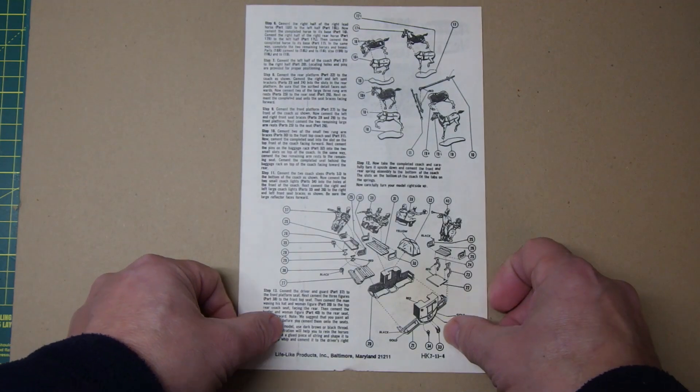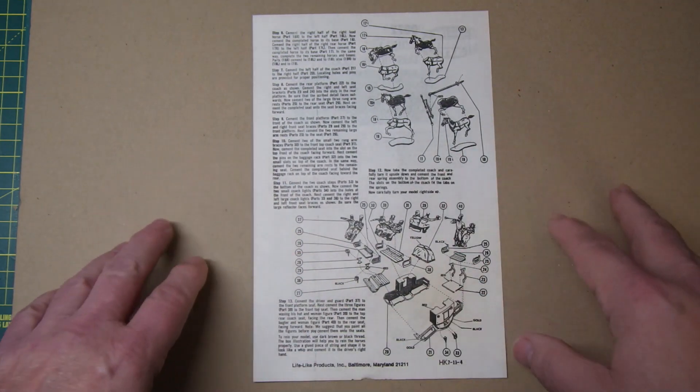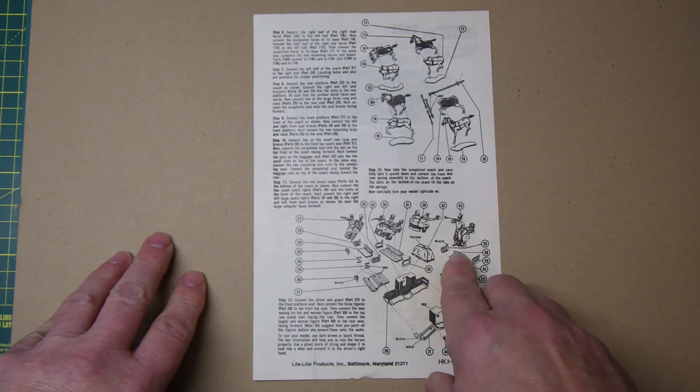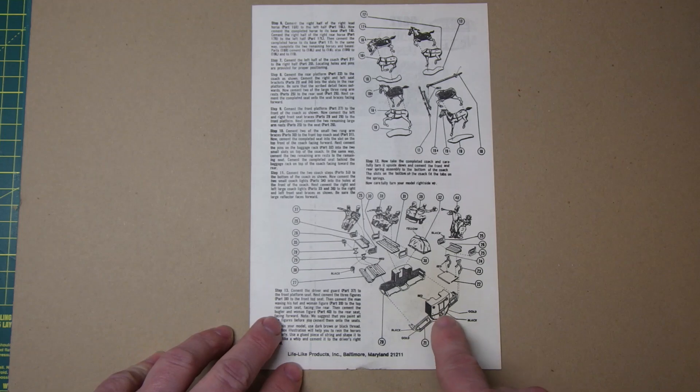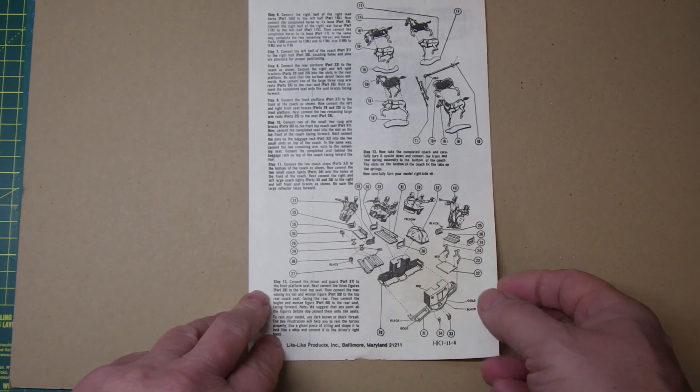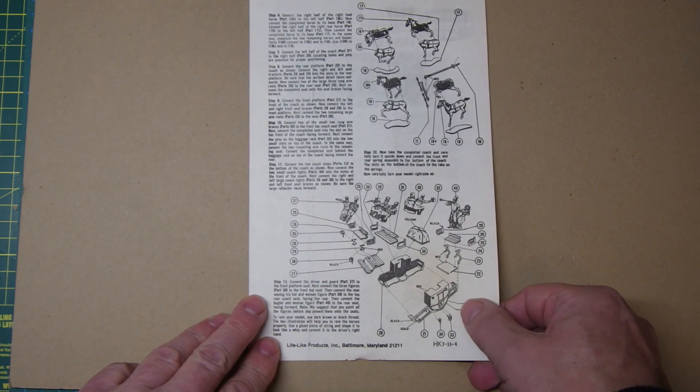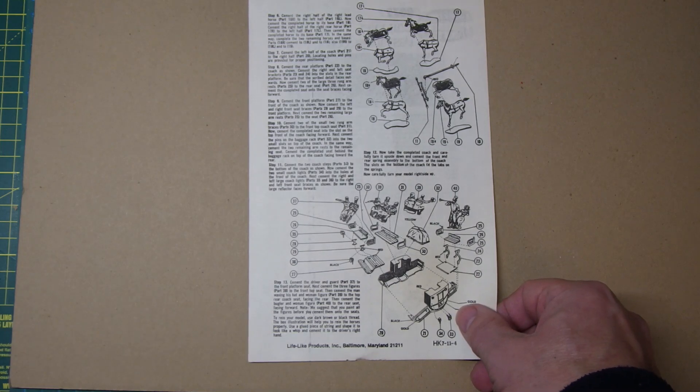And then on the reverse there's just more of the same, exploded diagrams and some basic color call outs for the parts. But we'll have to see what we can do to maybe pick that up a bit.